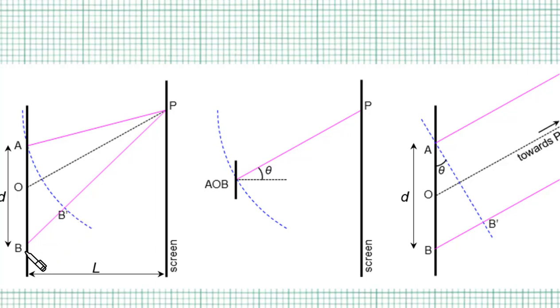It's going to cut the ray from slit B here. And I'm going to call this point B'. Since AP and B' are both radii of a circle, it means these two distances are the same. So the path difference, which is AP minus BP, will be equal to BB', right? So basically, I'm saying BB' is the path difference.